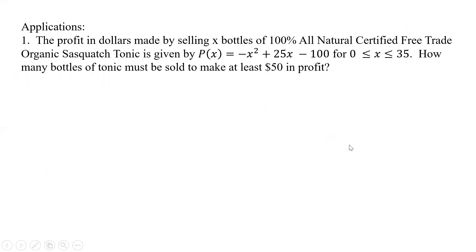Alright, what about an application problem? Well, so here we have the profit in dollars made by selling x bottles of 100% all-natural certified free-trade organic Sasquatch tonic. It is given by P(x) equals negative x squared plus 25x minus 100 for x between 0 and 35. Now, how many bottles of tonic must be sold to make at least $50 in profit?